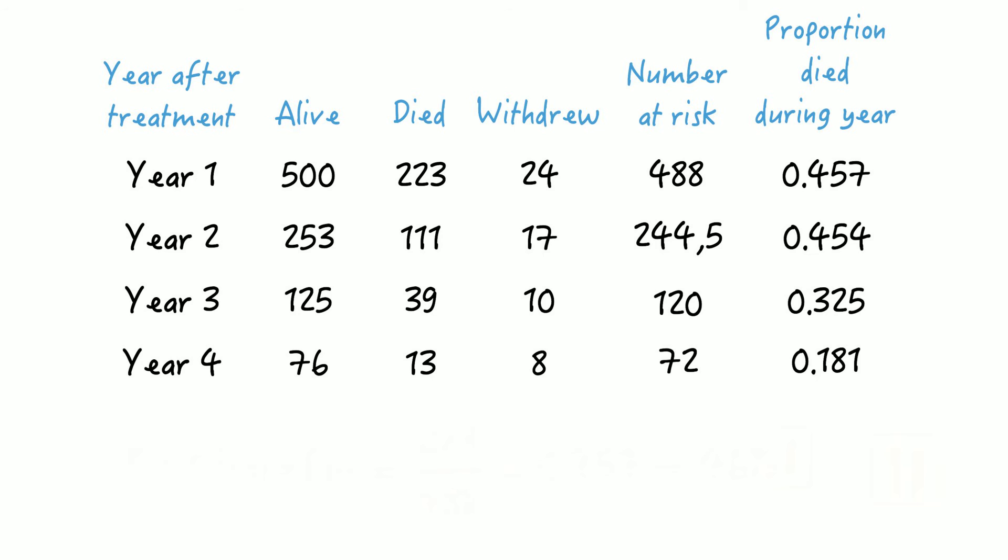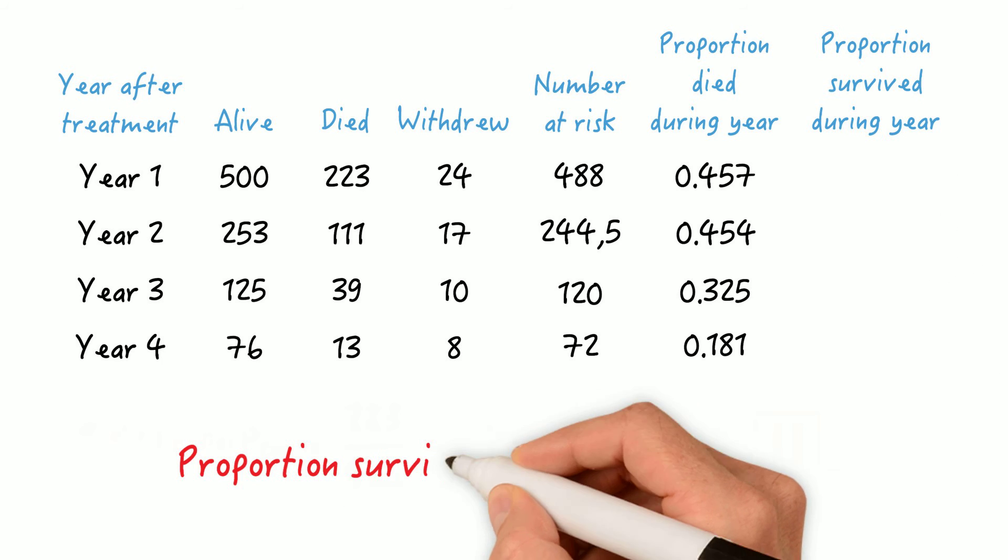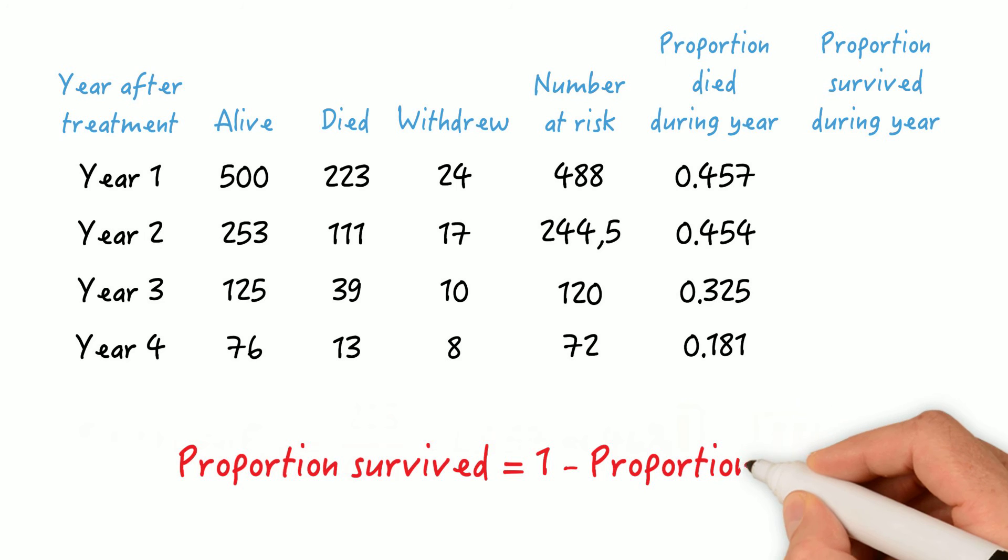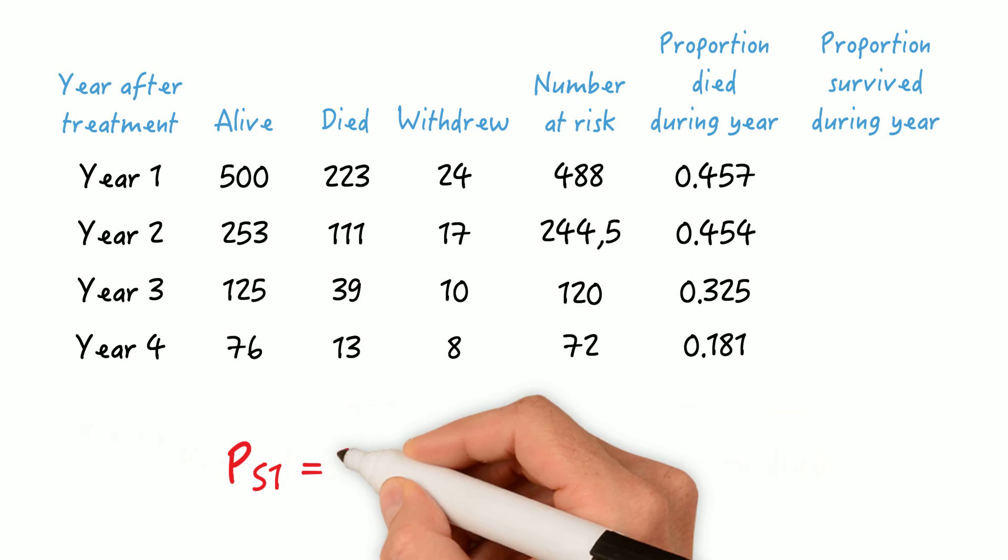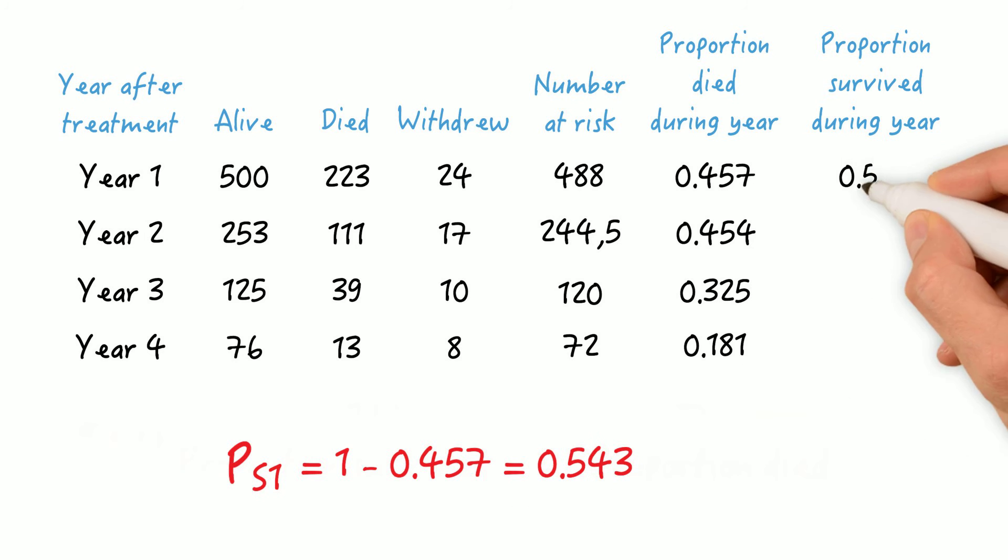Now, let's take the next step. The next step in the process is to calculate the proportion of participants who survived in each year, and that, as you can imagine, is calculated as 1 minus the proportion of participants who died. So for year 1, this would be 1 minus 0.457, which equals 0.543, or 53%.